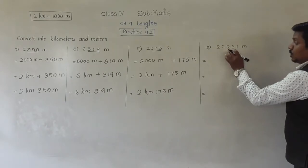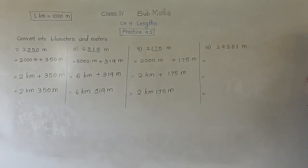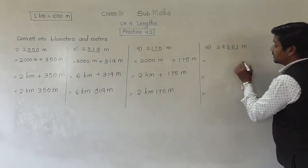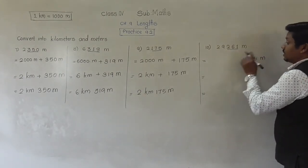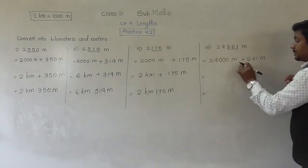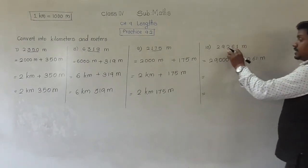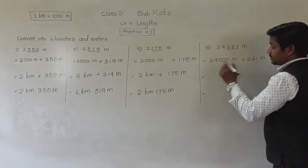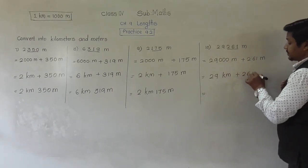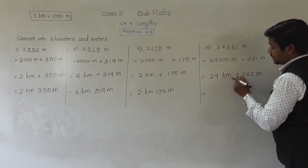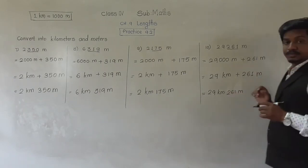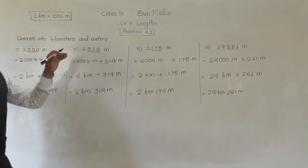Here also: 29,261 meters — how many kilometers and how many meters? The number formed by the last three digits is 261 meters. The remaining part is 29,000 meters — that is 29 followed by 3 zeros. So 29,000 meters plus 261 meters equals 29,261 meters. Since 1,000 meters makes 1 kilometer, 29,000 meters makes 29 kilometers. Therefore 29,261 meters equals 29 kilometers and 261 meters.